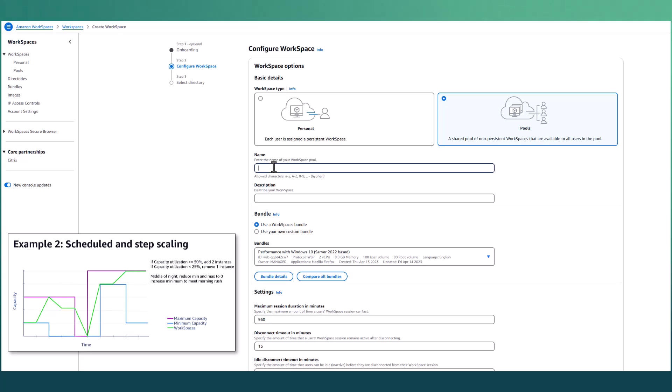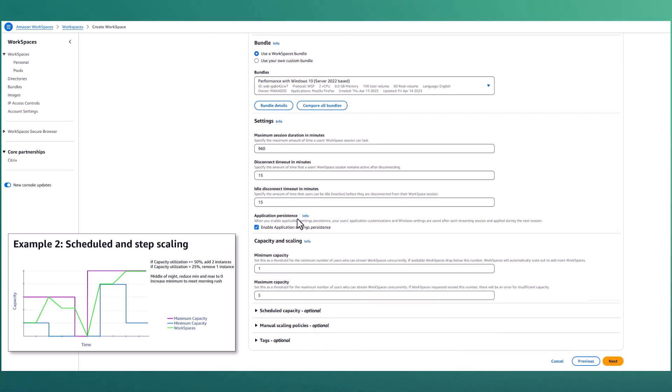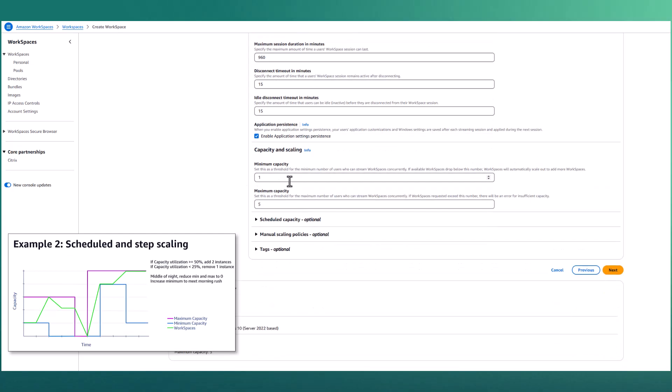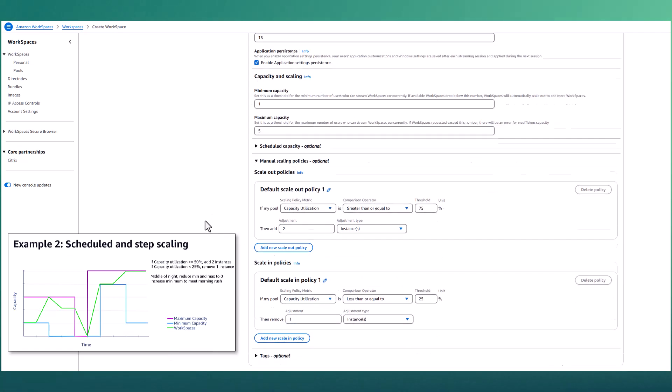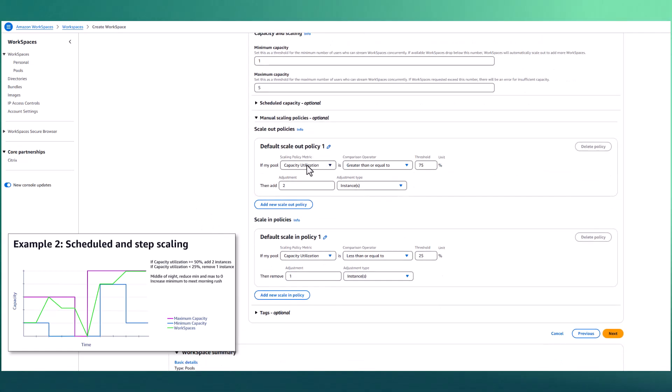First, we give our pool a name and a description to identify it within our environment. For this example, we're going to leave the default bundle and session settings in place. Here, we see the default minimum and maximum capacity values of 1 and 5. Again, these are the bounds within which the manual scaling policies will work within. By default, a new pool has predefined scaling policies on it.